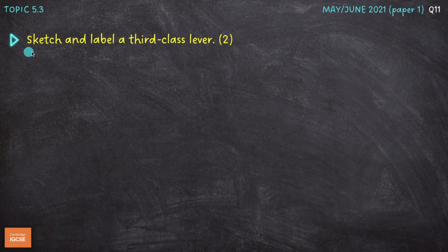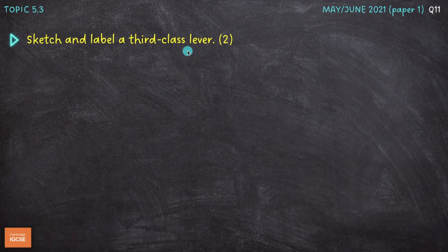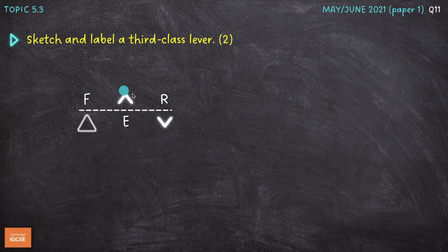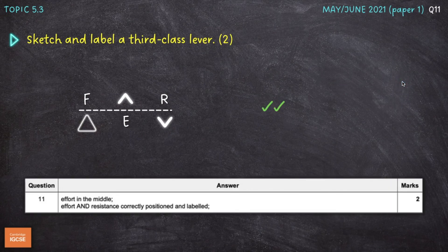The next question, from the 2021 May-June series paper one, asks us to sketch and label a third class lever for two marks. For this one, we need to make sure that effort is in the middle — that's the most important thing. Fulcrum and resistance can go on either side, but effort must be in the middle for a third class lever.